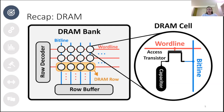If we combine DRAM cells into rows and columns in a two-dimensional structure, we get a DRAM bank. To open or activate a DRAM row, we apply a high enough voltage to that row's word line, which copies the row to the row buffer. We keep it there until all subsequent memory controller requests for that row are finished, then we close the row — a process called pre-charging. Pre-charging is the general state of all non-active rows.